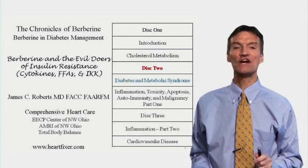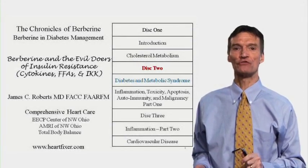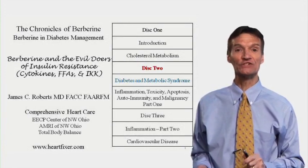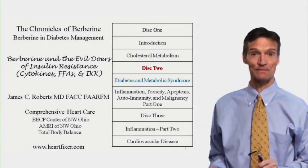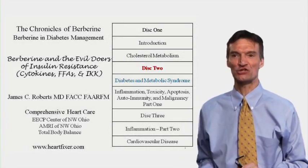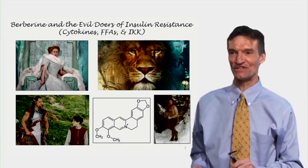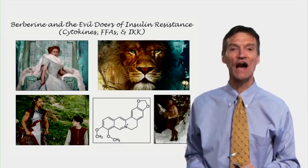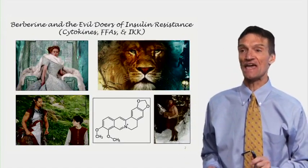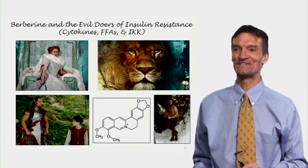The first section of Disc 2 deals with the use of berberine in dealing with insulin insensitivity and diabetes. I titled this section 'Berberine and the Evil Doers of Insulin Resistance': Cytokines, Free Fatty Acids, and Queen Jadis herself, Icpokinase.